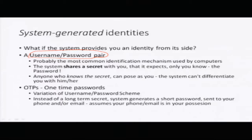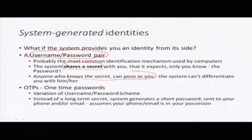So suppose any system that wants to identify you provides you an identity from its own side. A username or password pair is one such identity. So the system will give you a username or password. You can actually choose your username and password and this is a kind of a shared secret. The system knows this secret and only you know this secret, and if somebody can provide this secret, the system simply assumes that it's you.